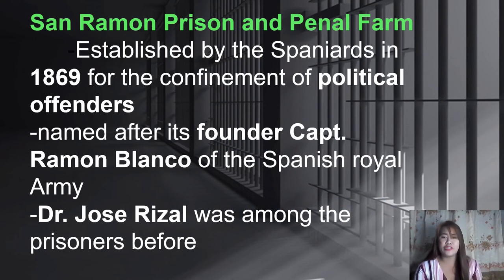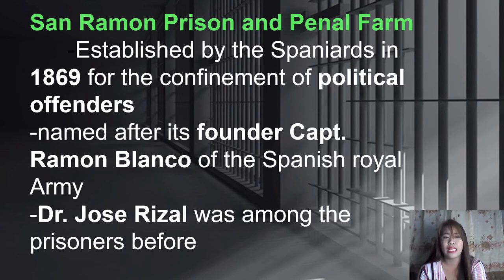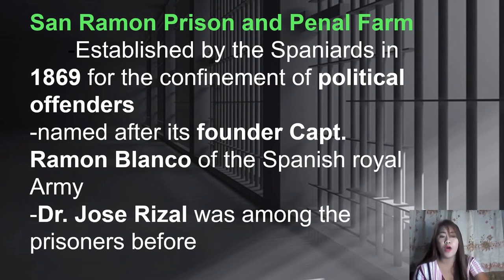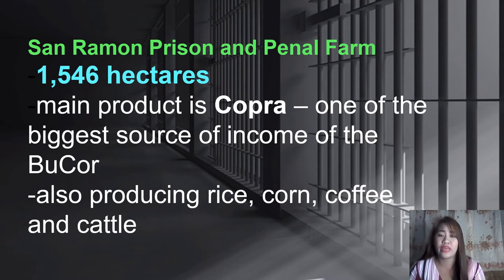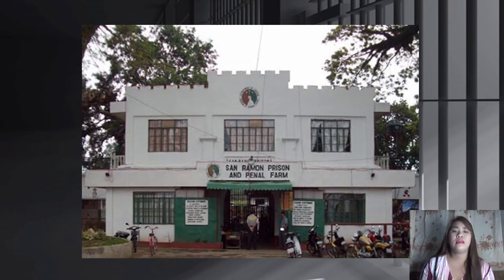San Ramon Prison and Penal Farm was established by the Spaniards in 1869 for the confinement of political offenders. It was named after its founder, Captain Ramon Blanco. Notably, Dr. Jose Rizal was among its prisoners. San Ramon Prison and Penal Farm has 1,546 hectares; its main product is copra, one of the biggest sources of income for the entire BuCor, and it also produces rice, corn, coffee, and cattle.